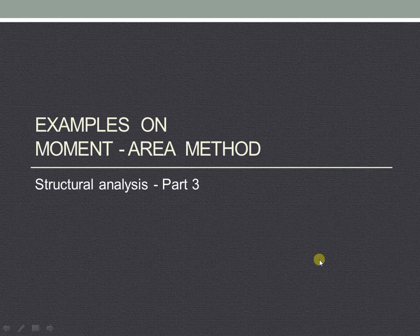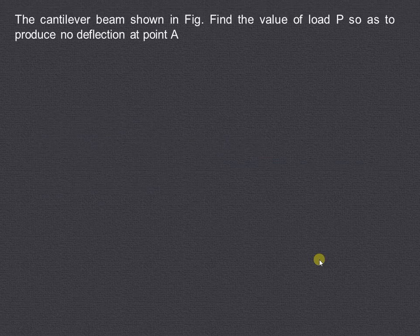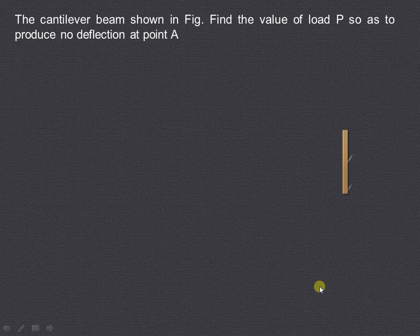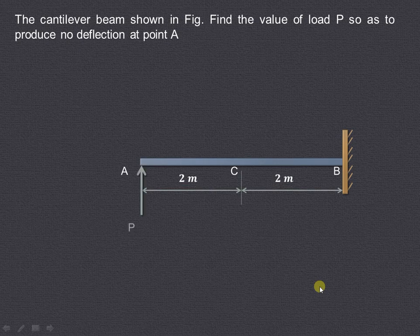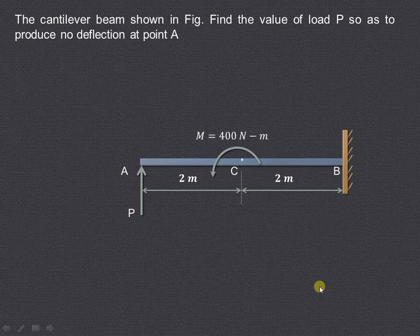In this video we will try to understand one typical example on moment area method. The cantilever beam is as shown over here and it carries a point load of P acting in the upward direction at the free end as well as a moment of 400 Nm acting in the anticlockwise direction at point C.